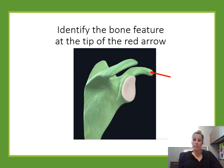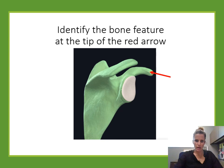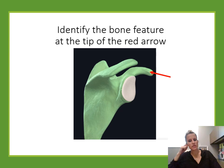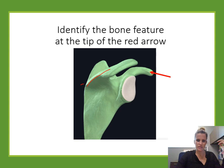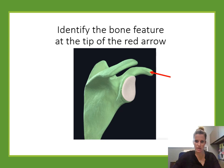Identify the bone feature at the tip of the red arrow. This is the scapula or shoulder blade. Two processes hook off the top: the acromion, which is a continuation of the spine of the scapula, and the coracoid process below it. The spine ridge across the back of the scapula continues up into the acromion. The bottom process is the coracoid process — that's the answer here.